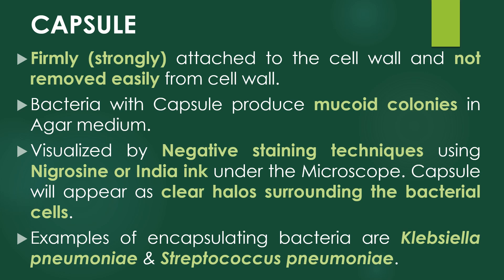The capsule is firmly or strongly attached to the cell wall and is not easily removed from it. Bacteria with capsules produce mucoid colonies on agar medium — for example, Klebsiella pneumoniae and Streptococcus pneumoniae produce mucoid colonies on nutrient agar plates. Capsules can be visualized by negative staining using stains such as nigrosin or Indian ink, where the capsule appears as a clear halo surrounding the bacterial cells.